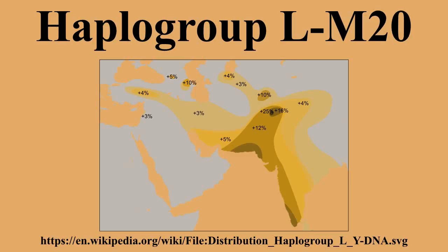Preliminary evidence gleaned from non-scientific sources, such as individuals who have had their Y chromosomes tested by commercial labs, suggests that most European examples of Haplogroup L M20 might belong to the subclade L M317, which is among South Asian populations generally the rarest of the subclades of Haplogroup L.